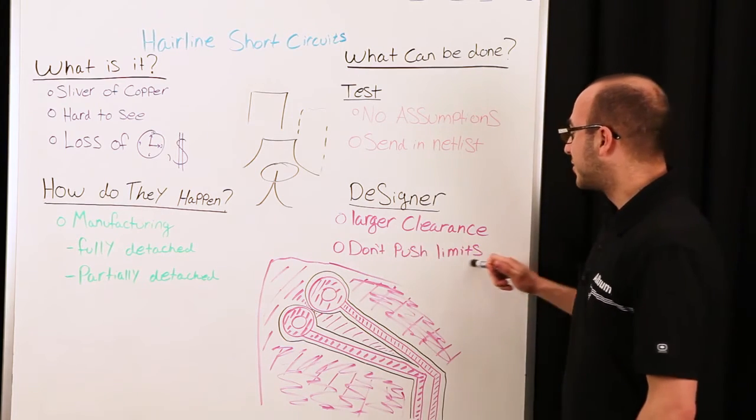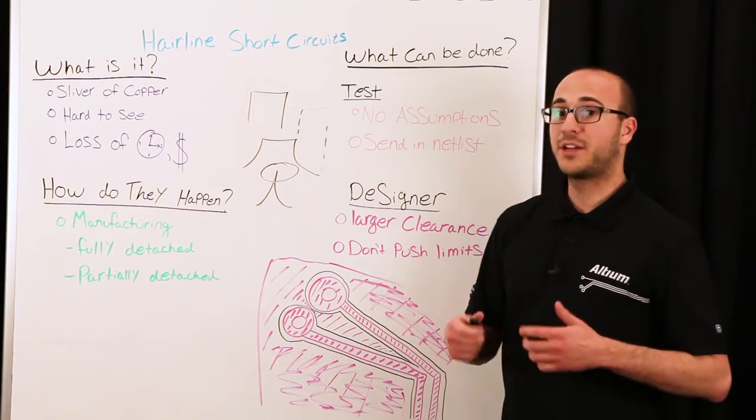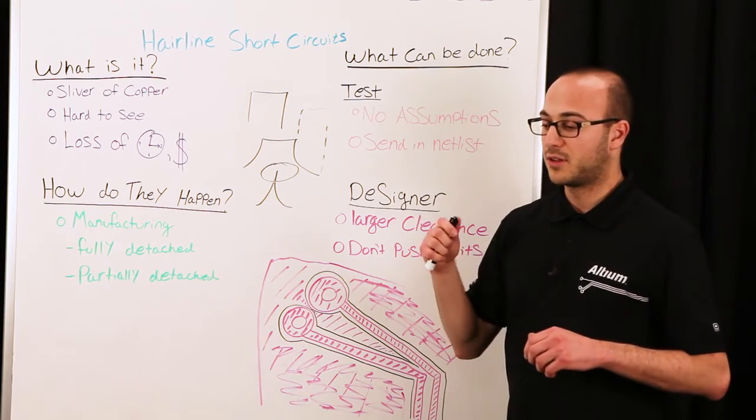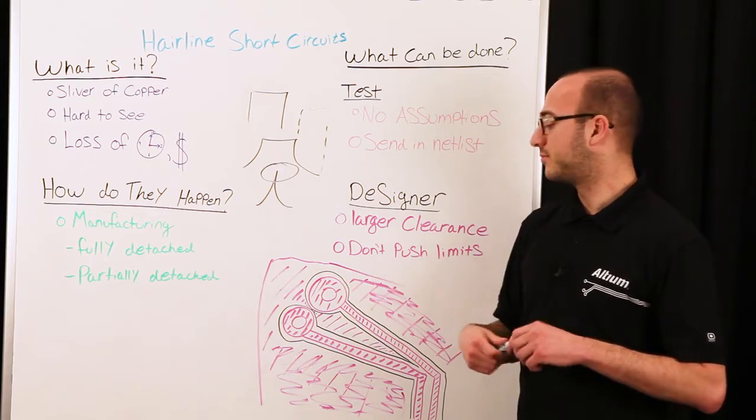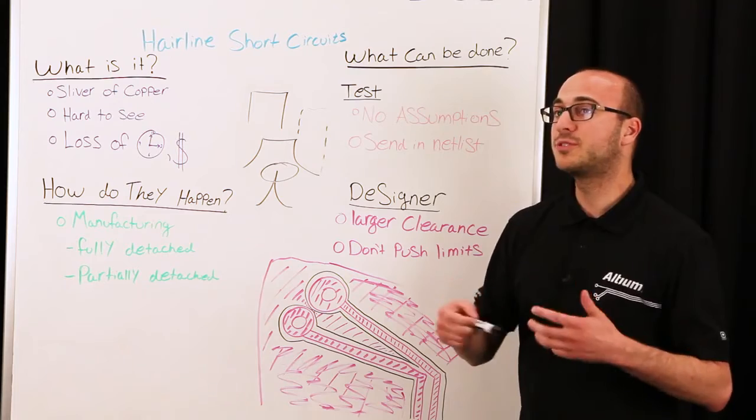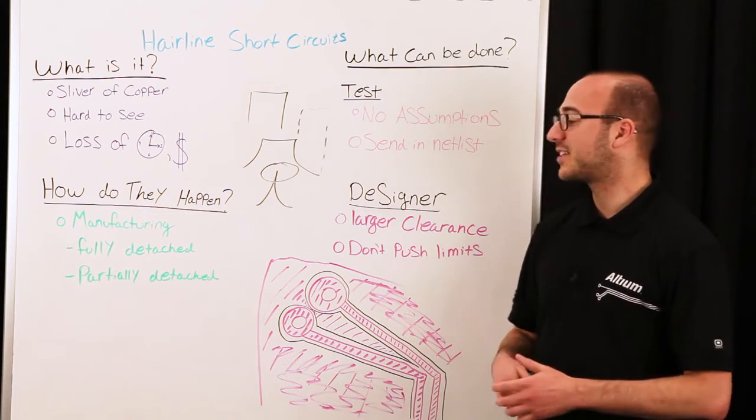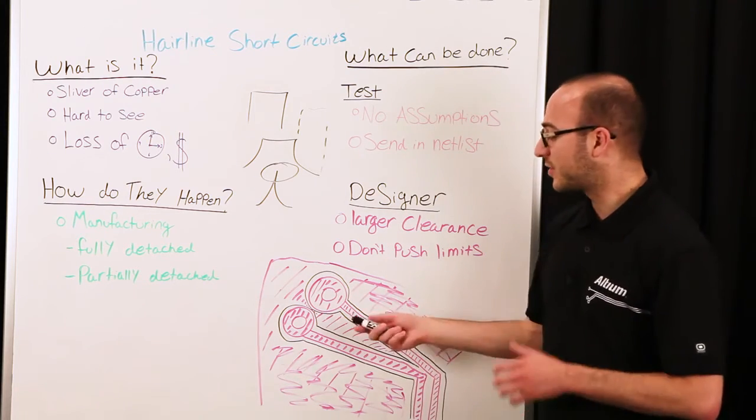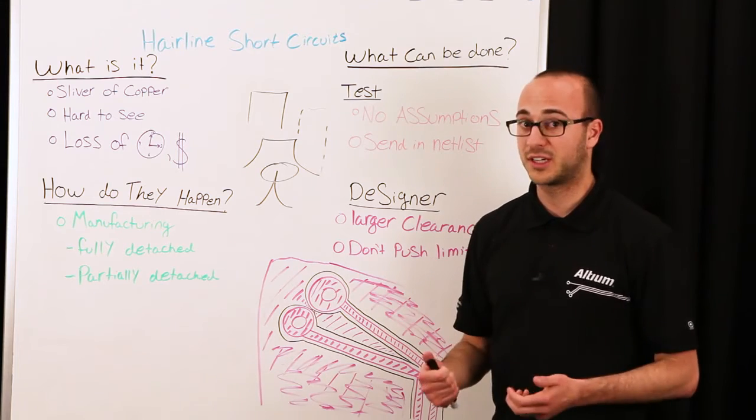The other thing is don't push the limits of your manufacturer. If your manufacturer says they can create a board with five mil clearance between copper features, don't design with five mils in mind. Design with six mils in mind. To give yourself a little wiggle room, you know the board's going to come out right.